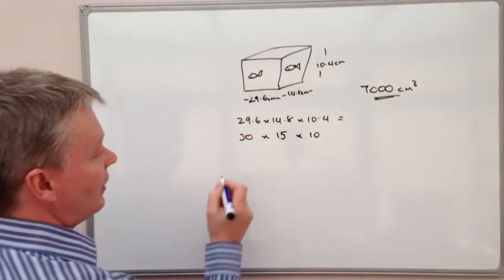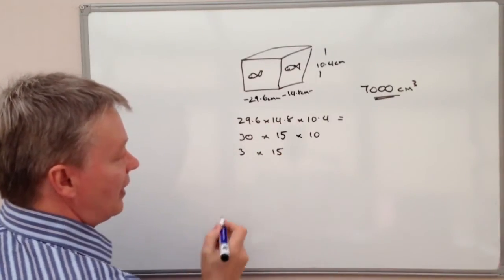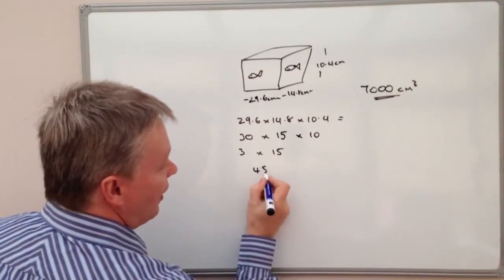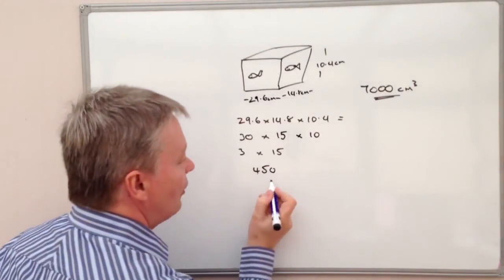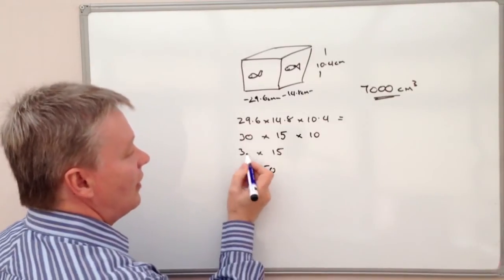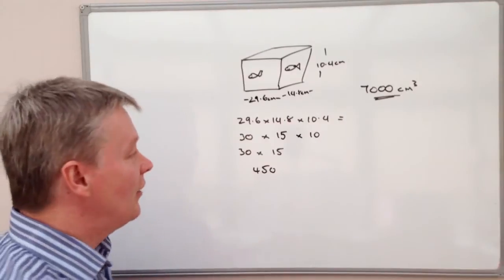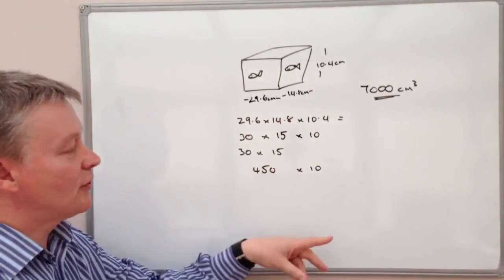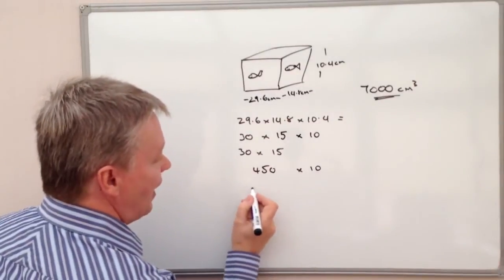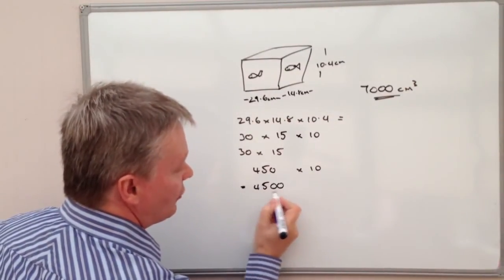But because it's 30 times 15 then I'm going to add a zero on the end of it, so 30 times 15 is 450. And then I'm going to multiply that by 10, and 450 multiplied by 10 equals 4500, and that's going to be centimeters cubed.